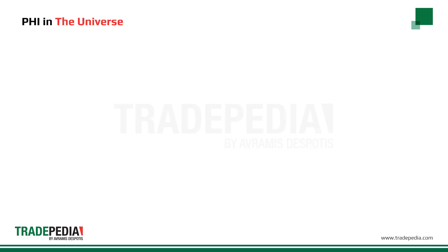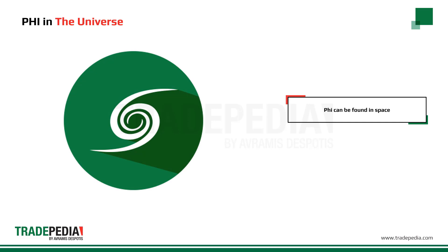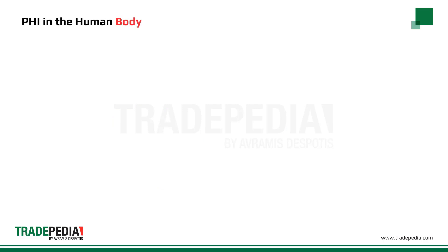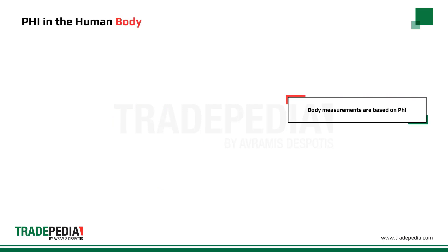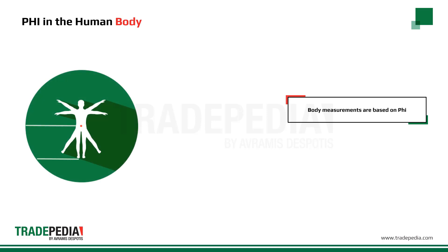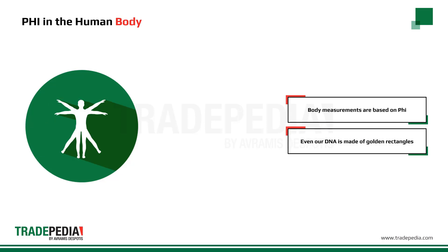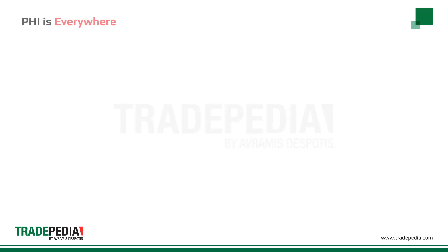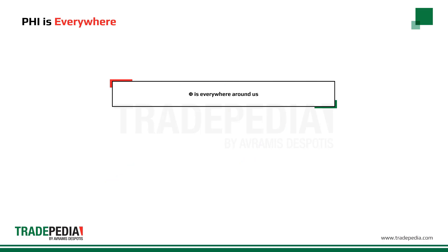Where else do we find phi? Phi can be found in space — the galaxy follows the shape of a golden spiral. Human bodies considered perfect by others are symmetrical based on phi. If the distance from the floor to the belly button is 1 meter, then from the belly button to the top of the head is 0.618 meters — this is the perfect body. Furthermore, our DNA is made up of golden rectangles — it is 21 by 34 angstroms. Phi is everywhere around us: in the plants, the animals, the galaxy, even in our DNA.